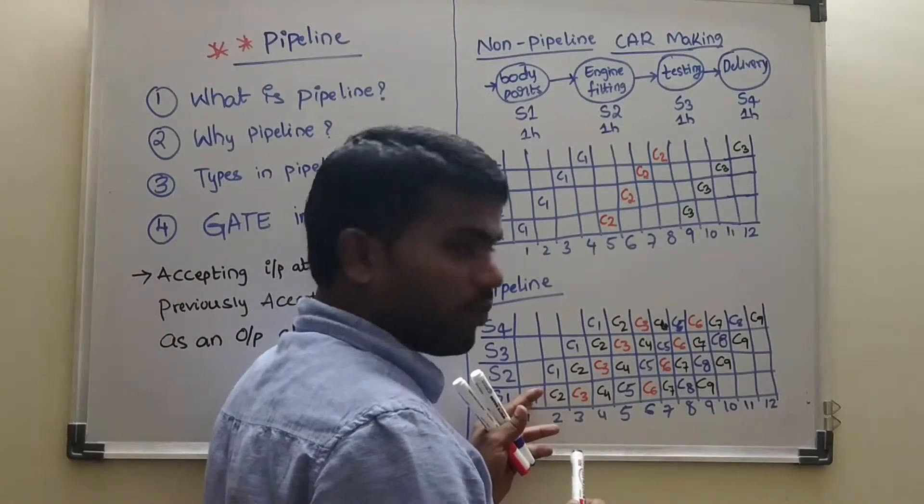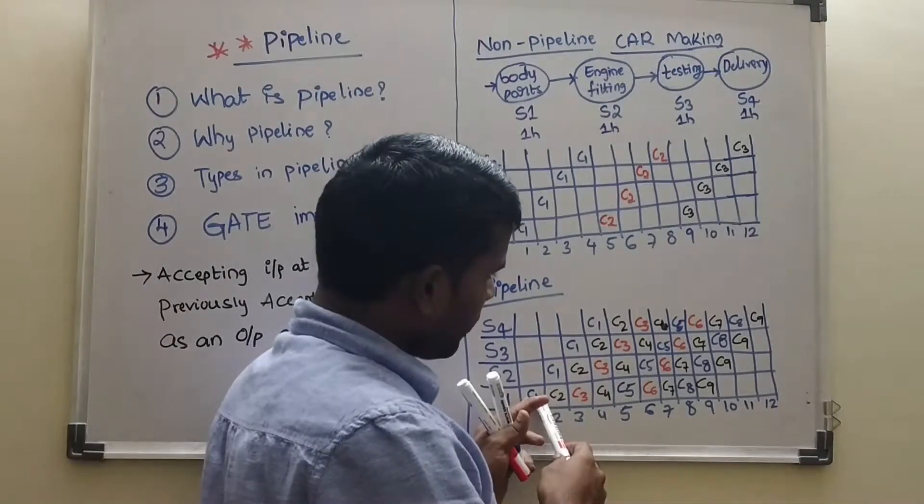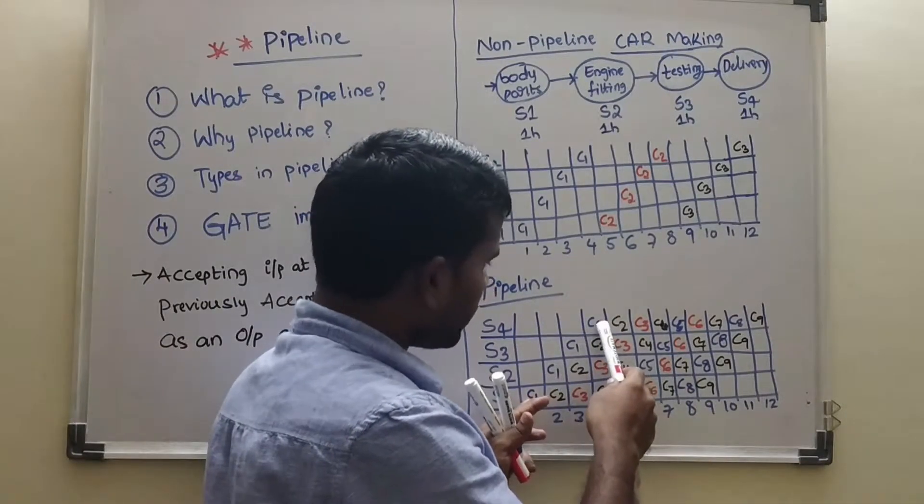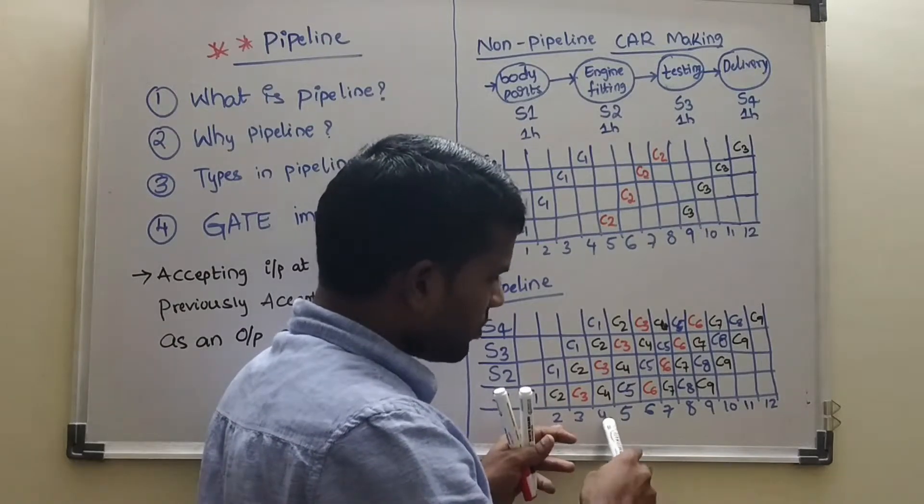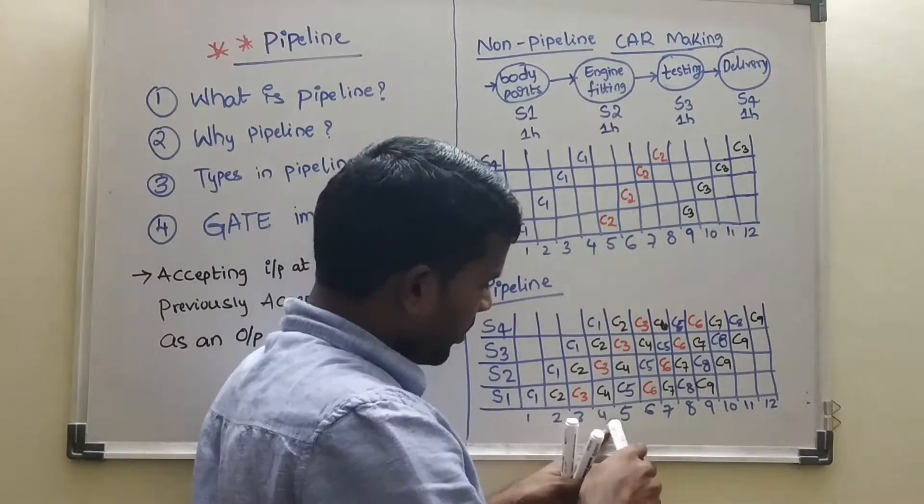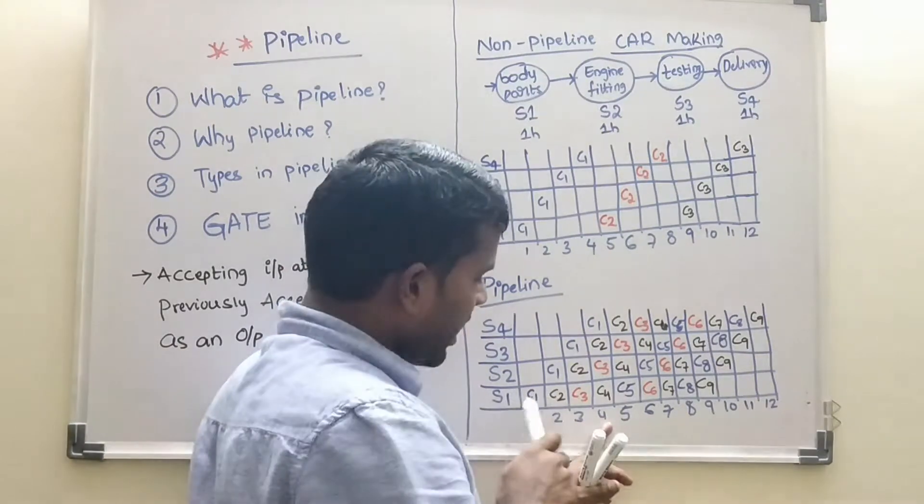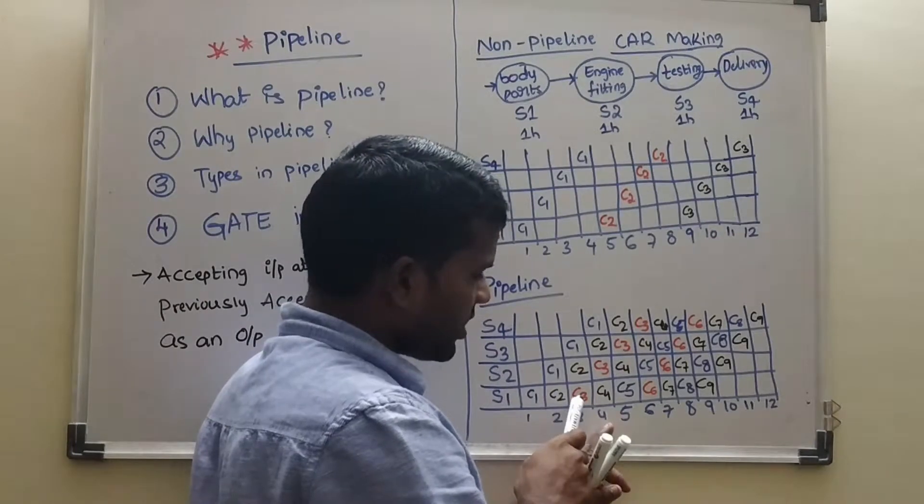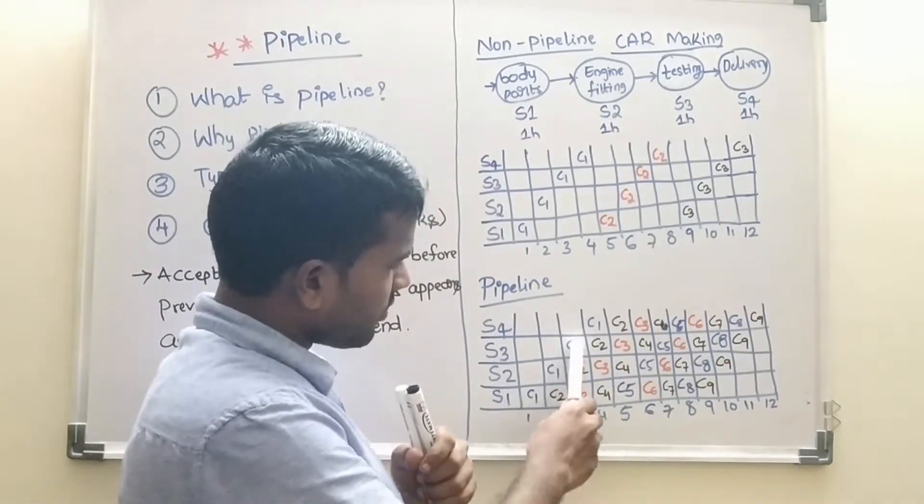C1 is the input in stage 1. So this stage 1 input appears at stage 4, at cycle 4. Before C1 appears at 4, we already in this pipeline has taken 2 inputs, C2 and C3. Even C4 also. Here you can see at C1, C1, C1.